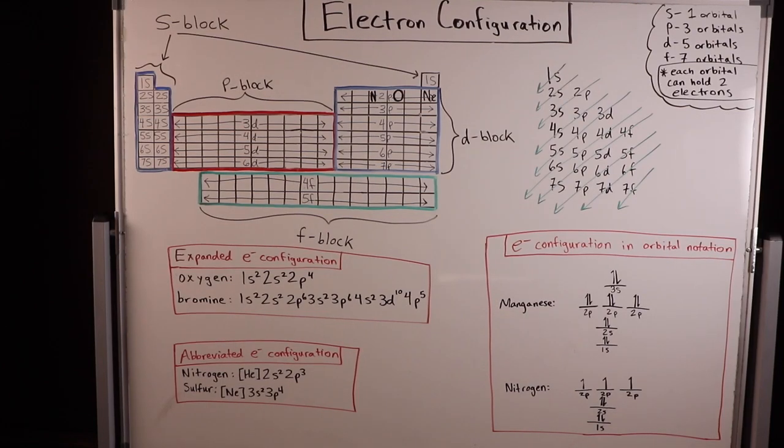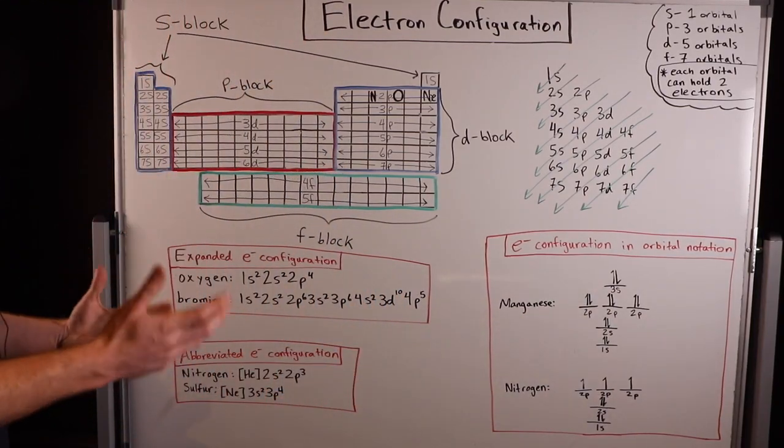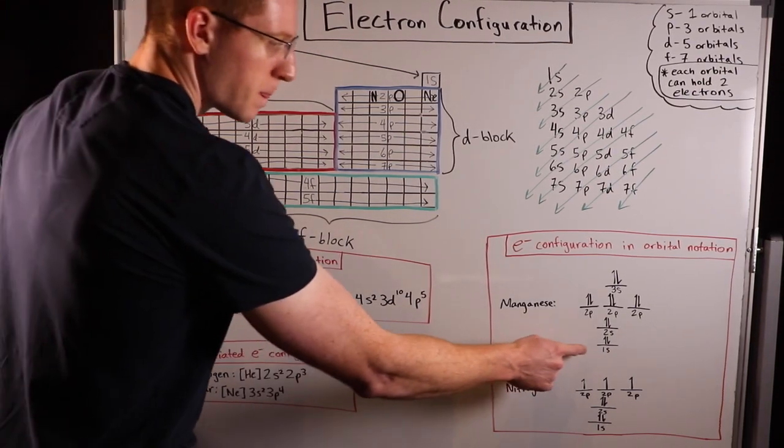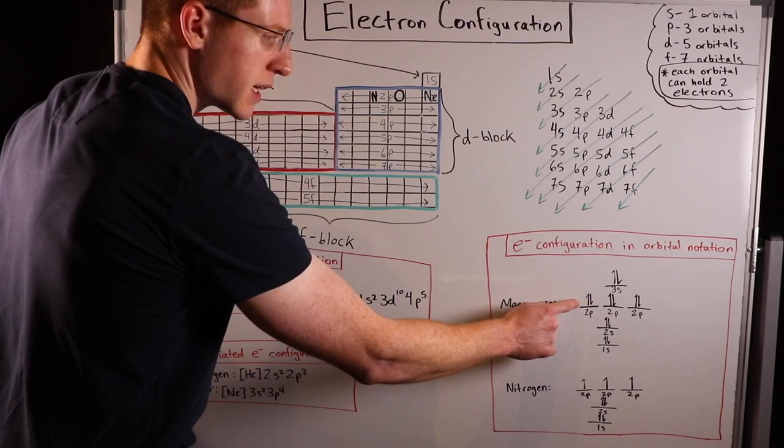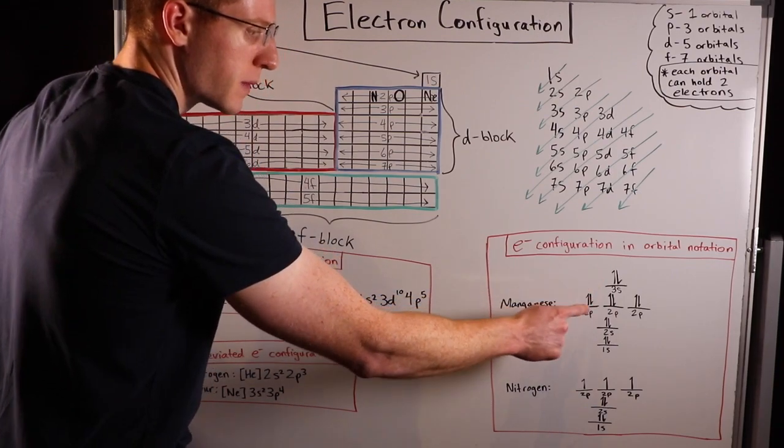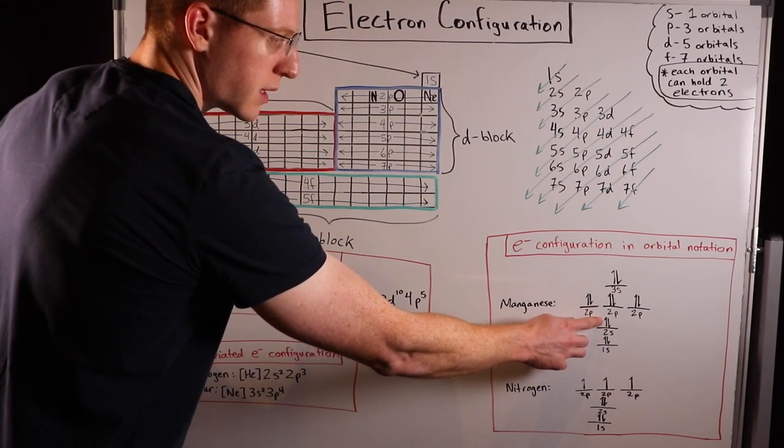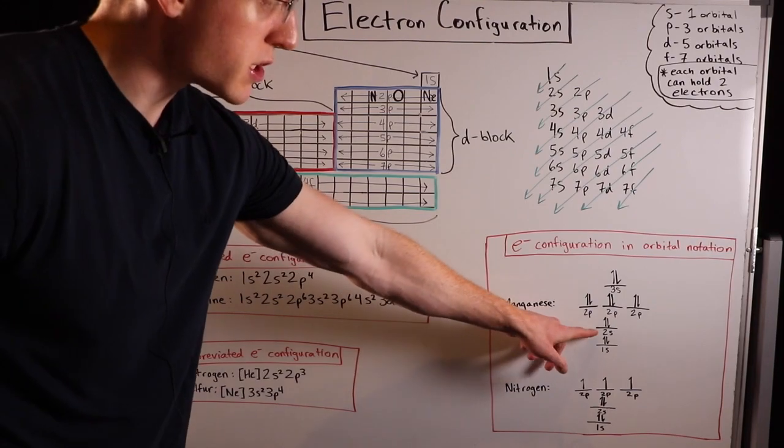You may see electron configurations written in orbital notation. That's what this looks like. I did an example, manganese. Manganese, its electron configuration would be 1s2, 2s2, 2p6, 3s2. Each one of these arrows is an electron, and each platform here is an orbital.